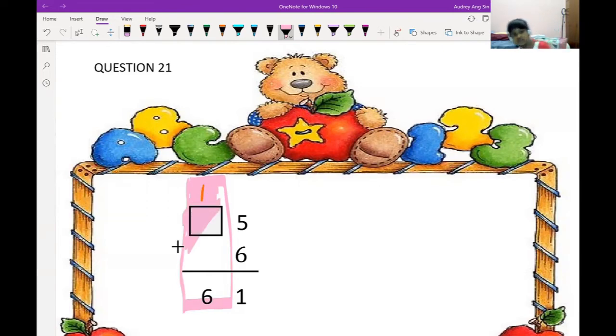Now I have to do 1 plus box equals to 6. How to find this box? 1 after 1, 2, 3, 4, 5, 6. You stop at 6 because the number here is 6. So how many fingers you have? 5. Then the answer is 5.